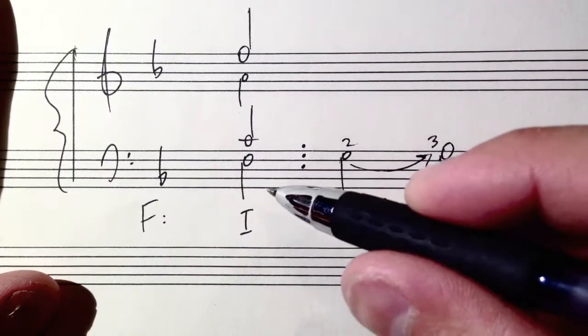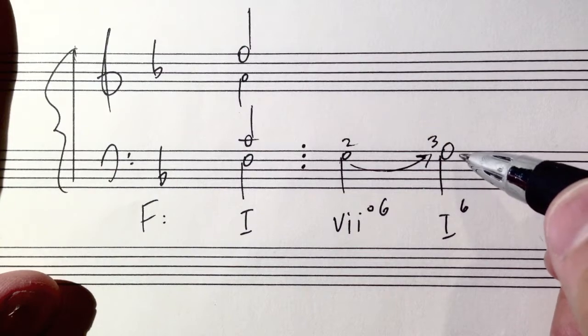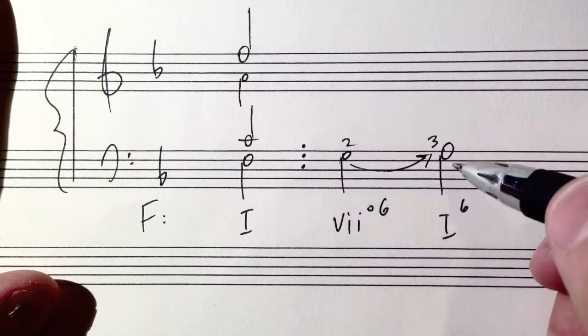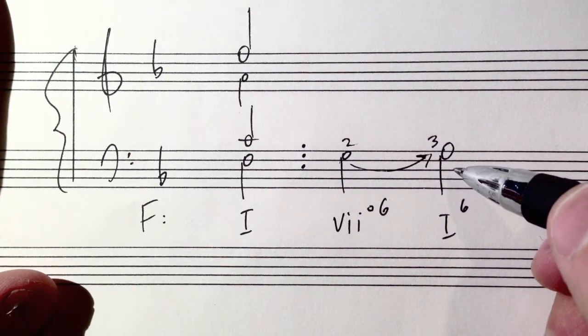But here in this mode, in this motion, you have it as a passing chord to your one six chord. Again, passing means that there's an ascent stepwise in motion. If it would have returned to the F natural it would have been your upper neighbor to your F, not to the F natural to the one chord.